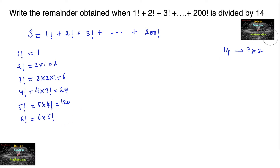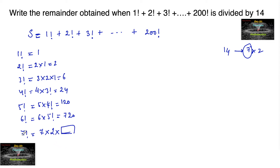7 factorial can be written as 7 into 6 into ... and since 7 is a factor and 2 is also a factor, 7 factorial is 14 times some number — so 7 factorial is divisible by 14. And 8 factorial is 8 into 7 factorial, which is again divisible by 14, and so on — 9 factorial and all the way up to 200 factorial are also divisible by 14.